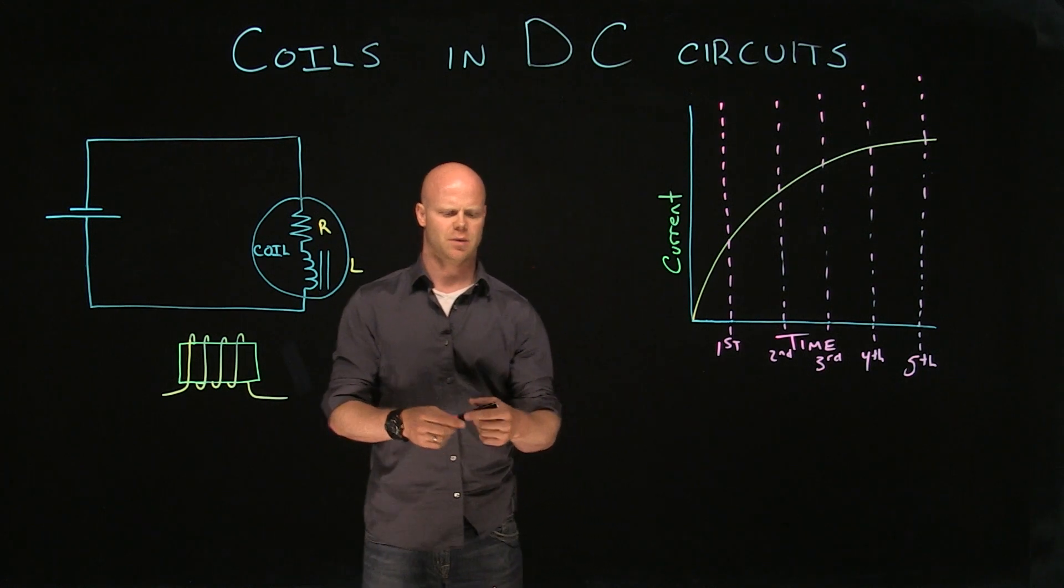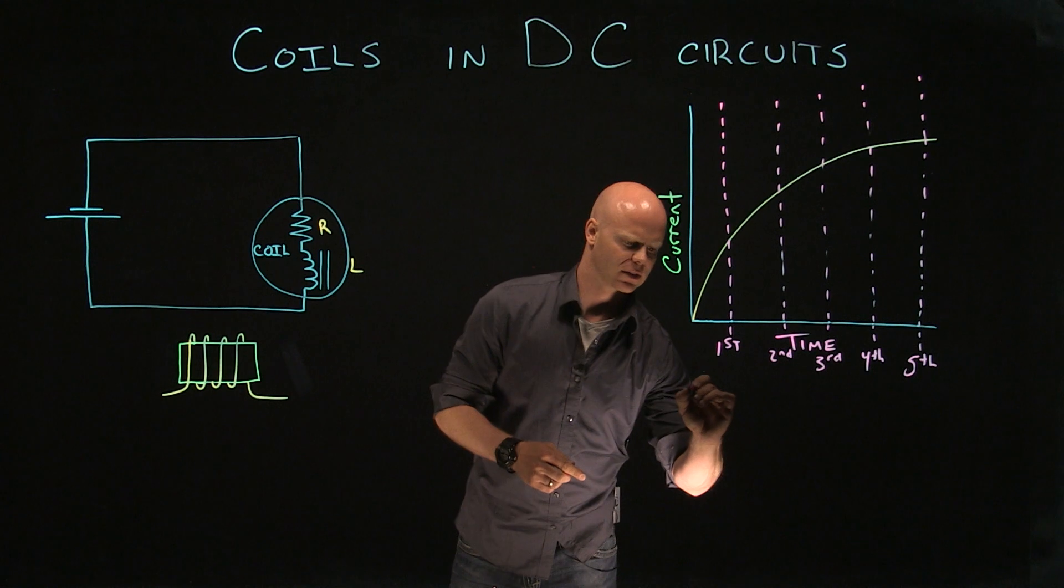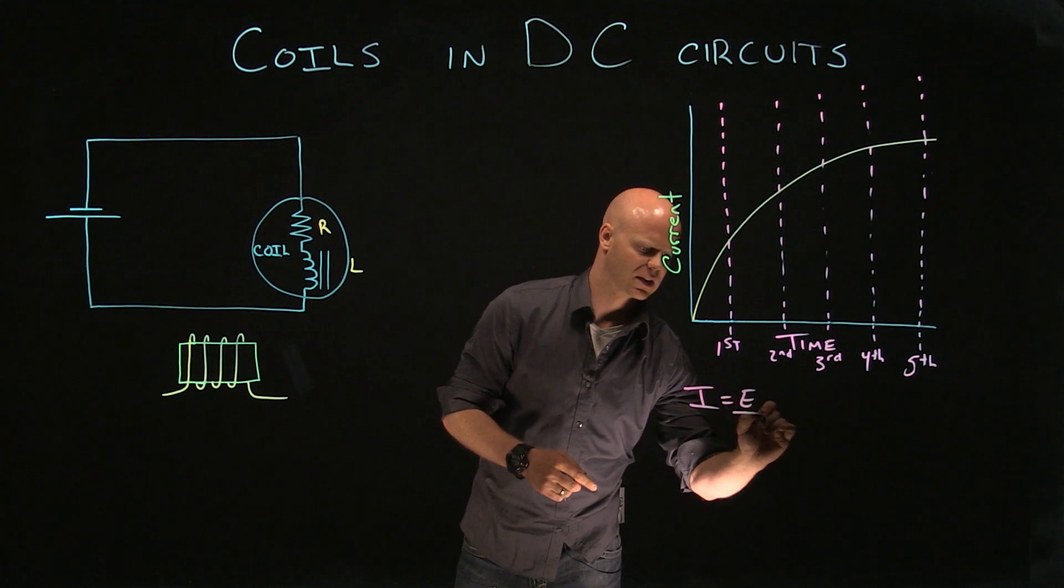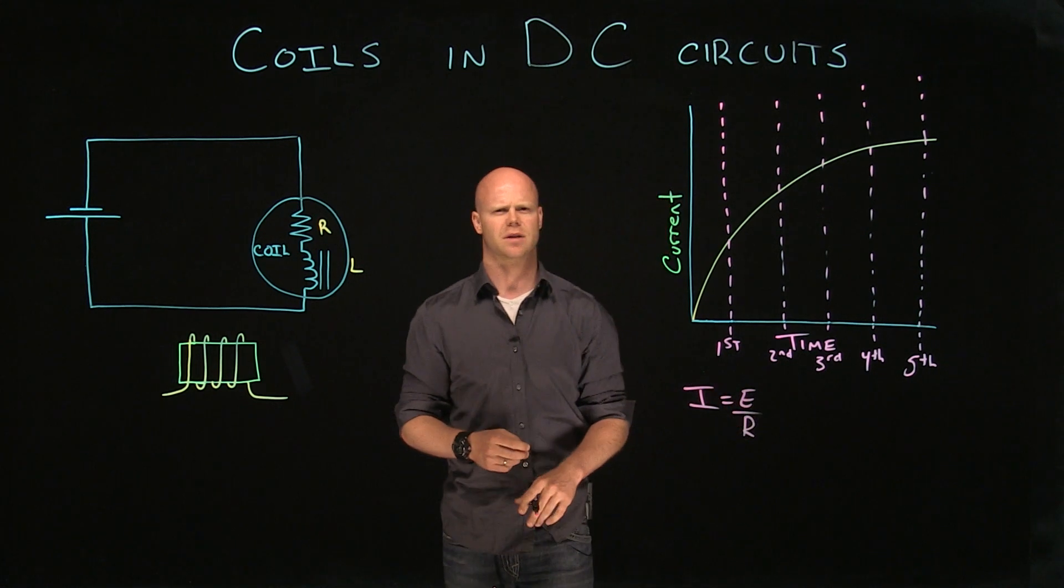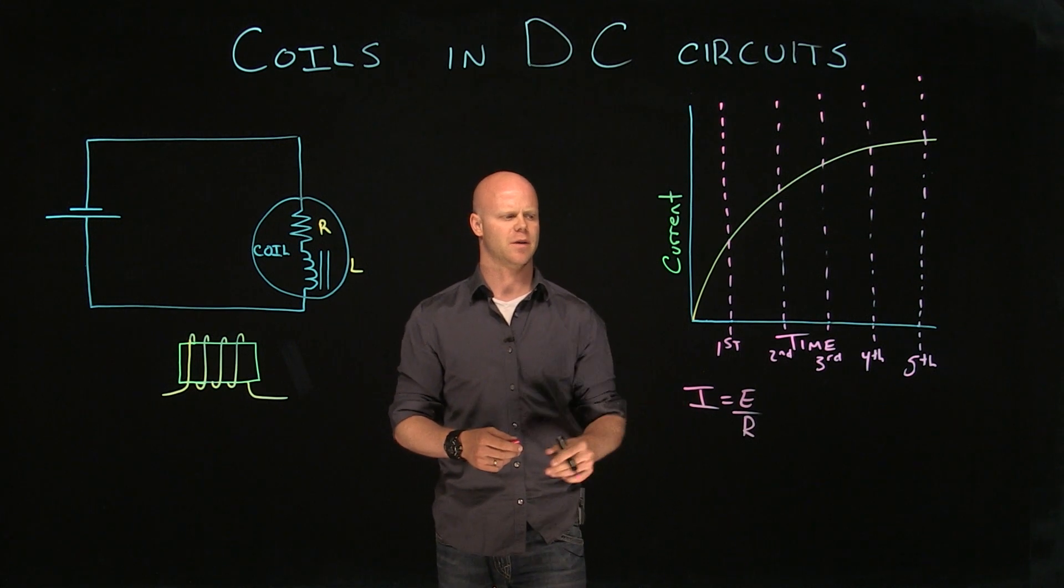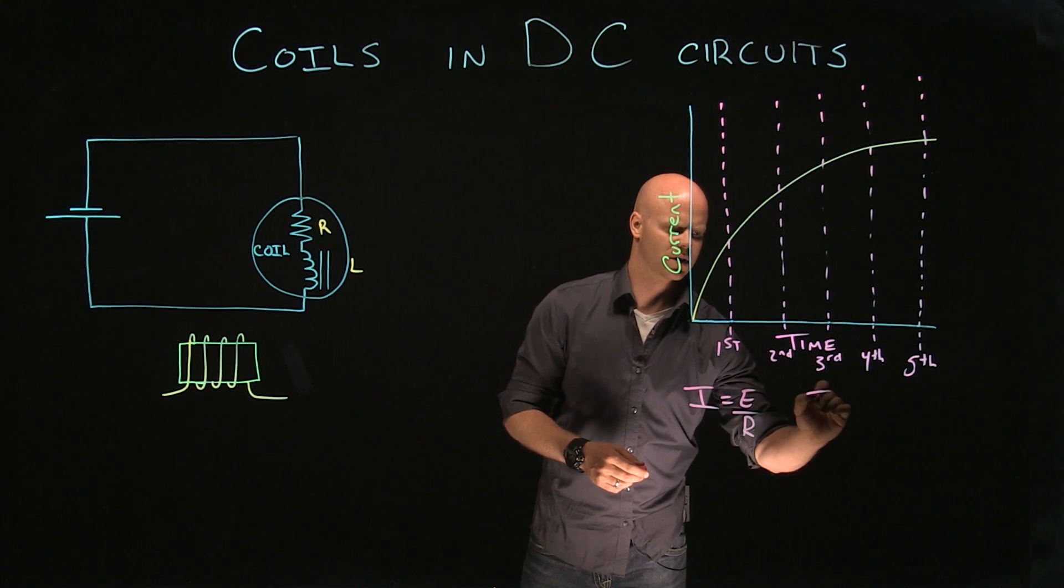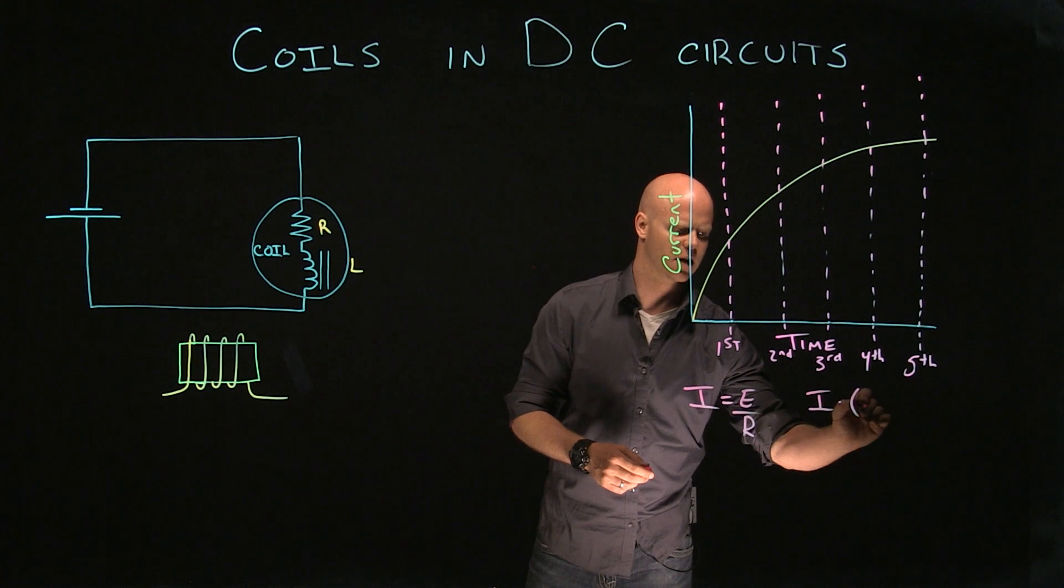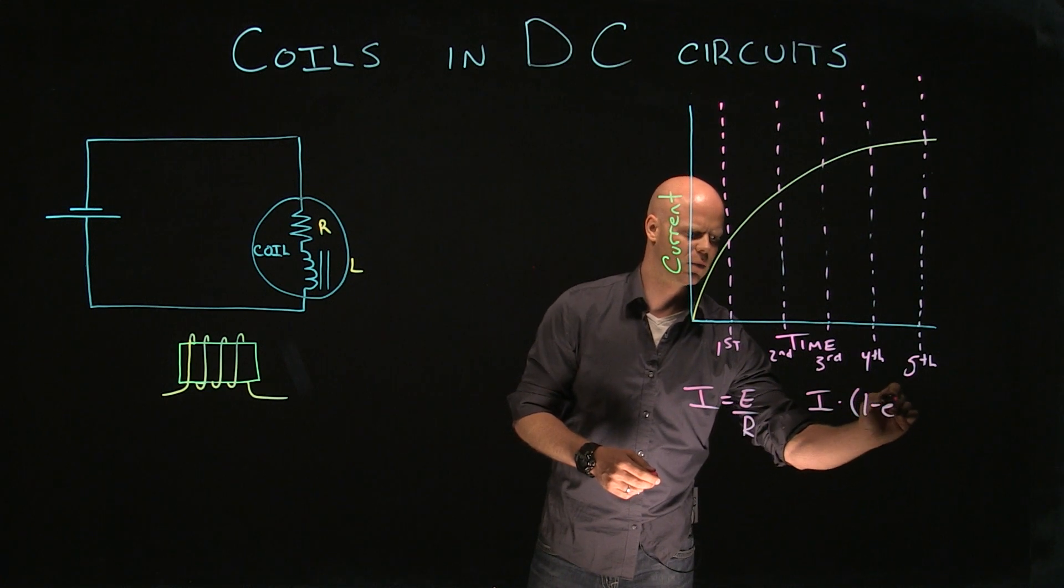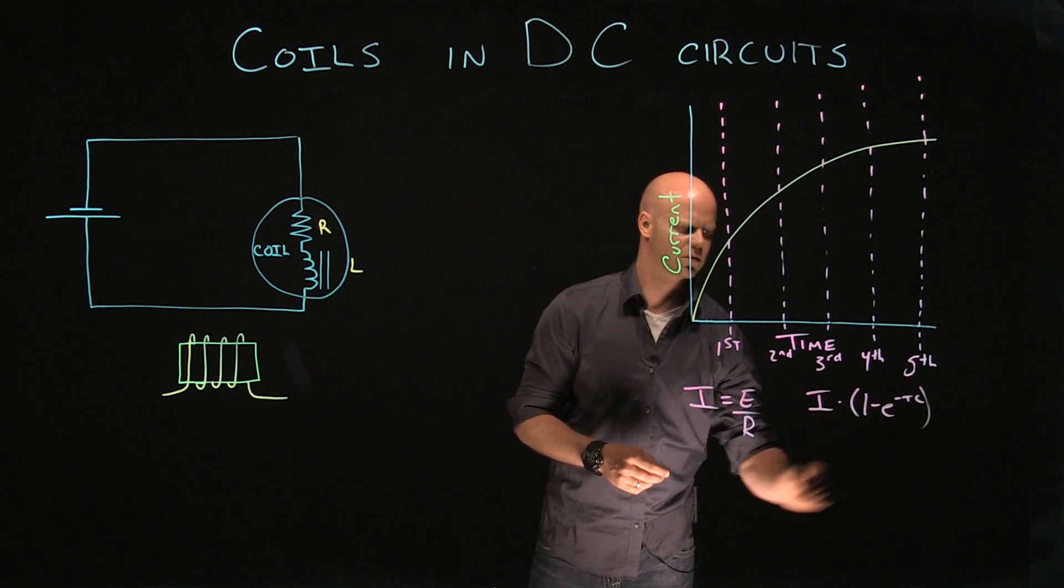Some of the things that we have to look at are what is the maximum value of current or the steady state of current based on the applied EMF and the resistance. We also want to take that maximum value of current and look at what it is at each individual time constant.